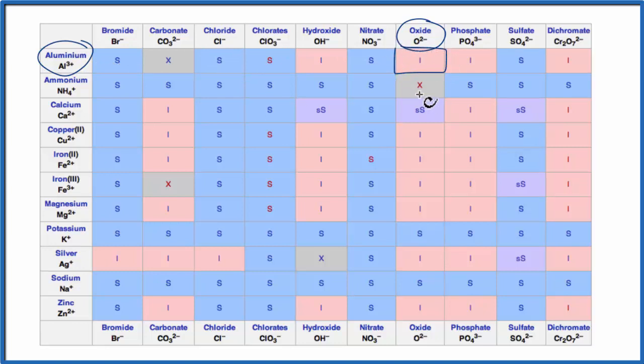And that means that aluminum oxide is insoluble in water. It won't dissolve in water. Let's go back to our equation.